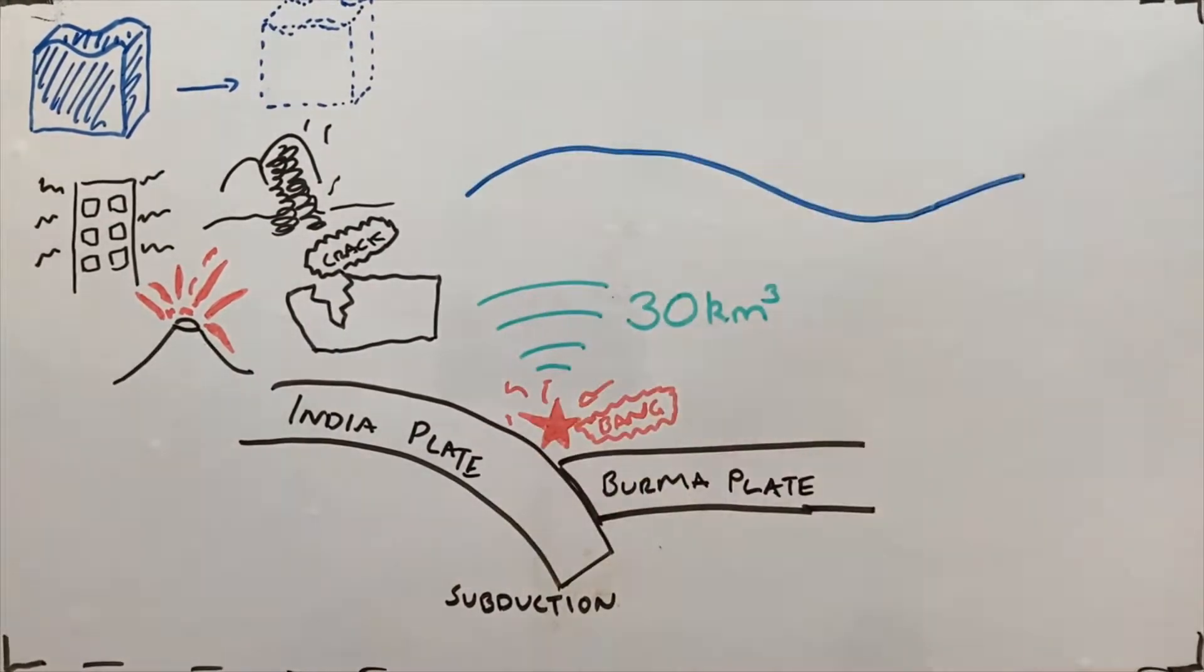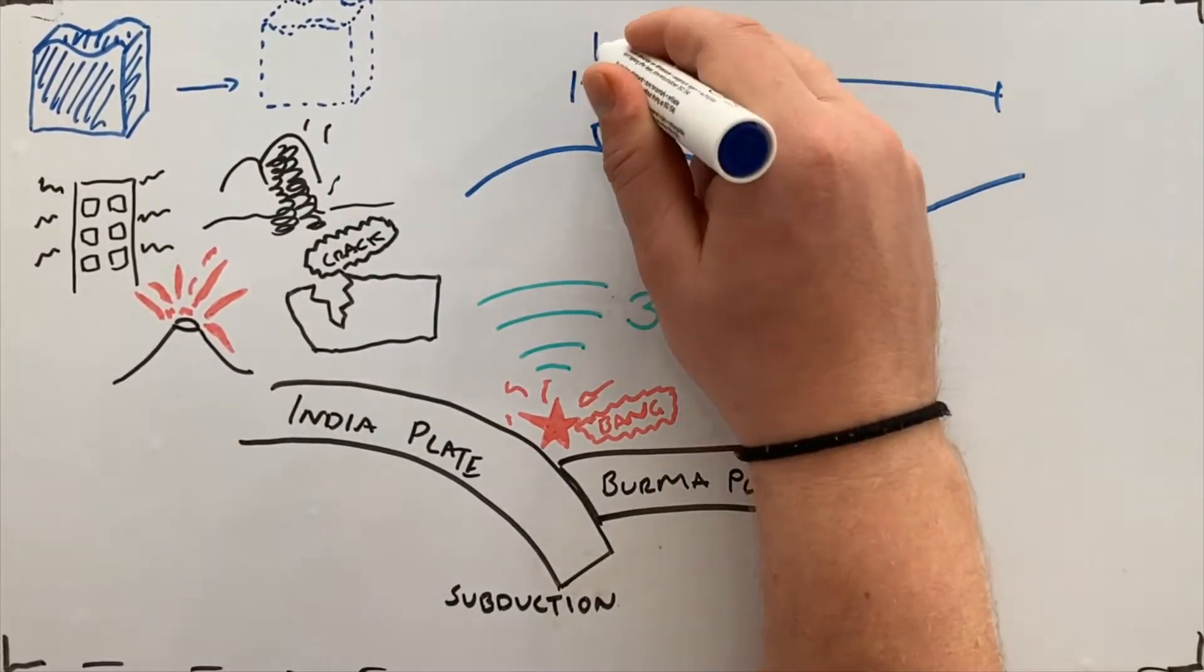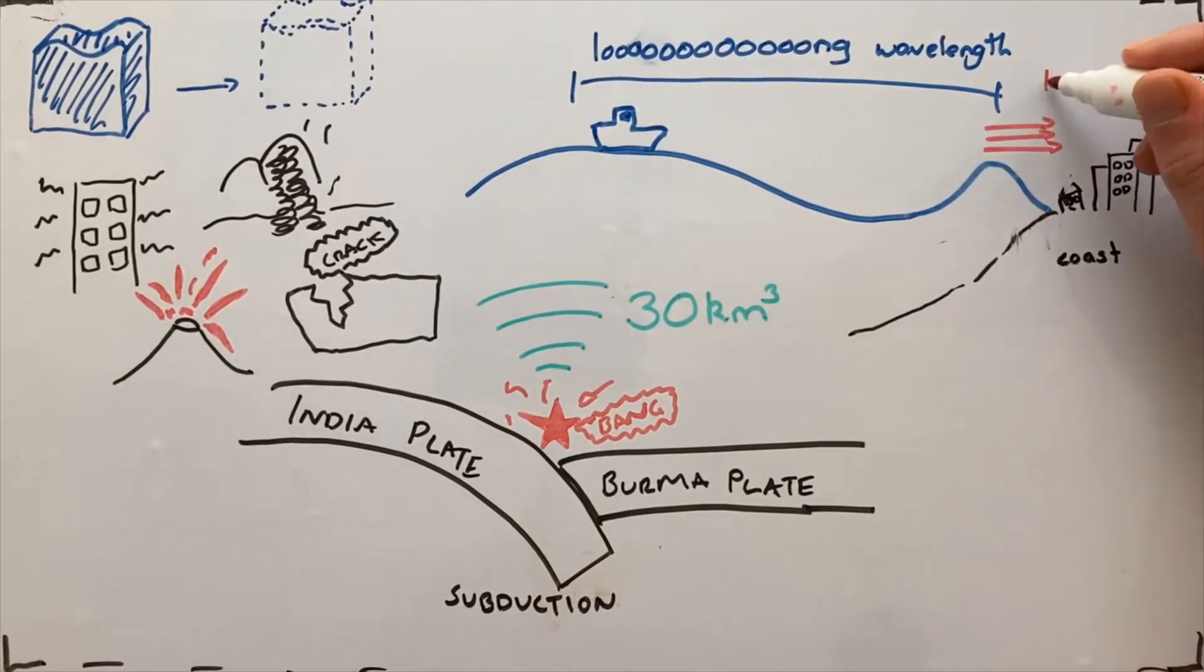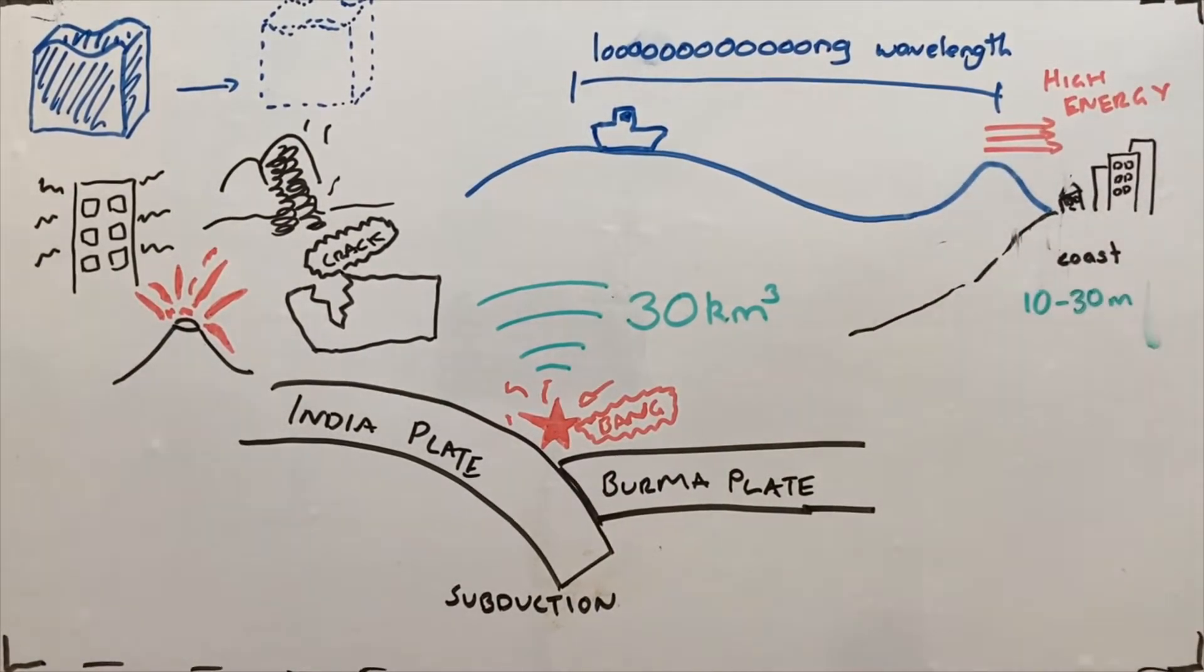In the deep ocean, this displacement is small and over long wavelengths, so it's not easily detectable. However, as the tsunami reaches the shore, the huge amount of energy produces extremely strong waves that can reach over 10 meters high and wash far inland.